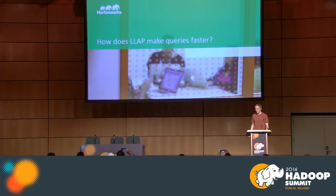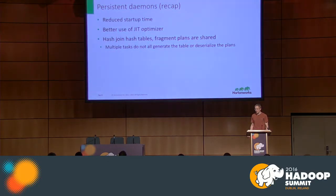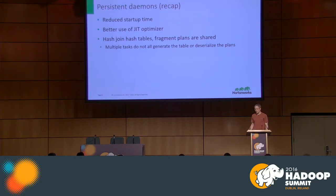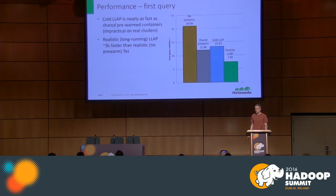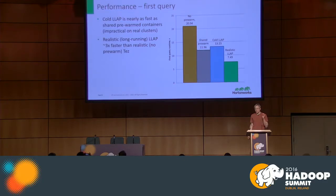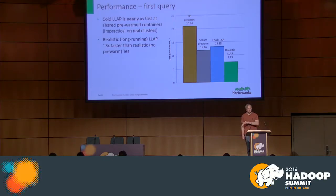Now a little detail on how it all works. The persistent daemon optimizations I mentioned: sharing, startup time, and the JIT optimizer. Consider the first query performance — anyone who's done ad hoc analytics on Hive knows that the first query takes forever, the second is slightly faster, the third faster still — a ramp-up of the Hive pipeline. TEZ already has a container pre-warm feature, but due to restrictions like no sharing, it's hard to use in real production environments.